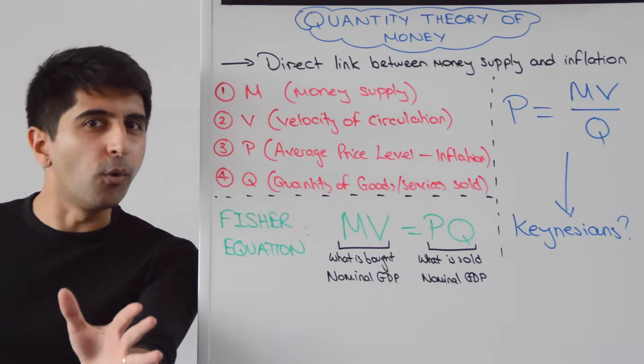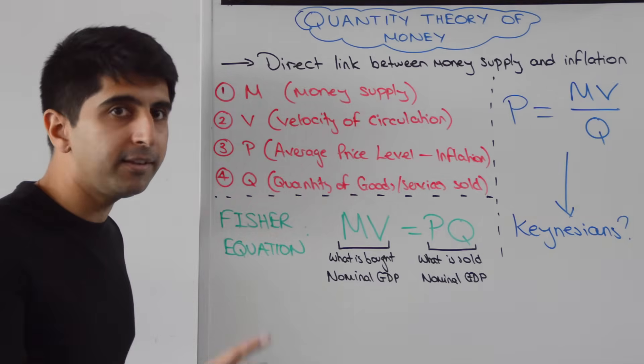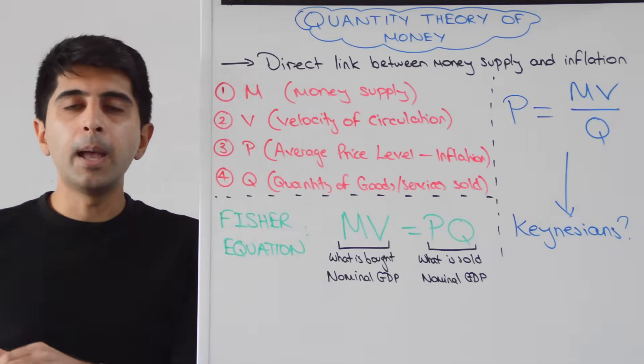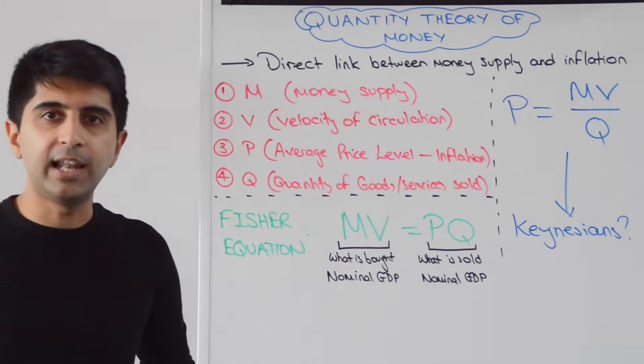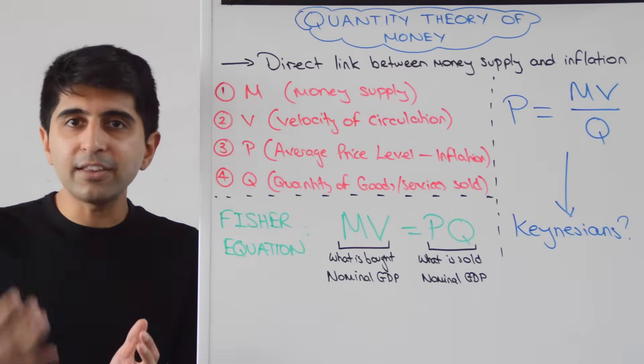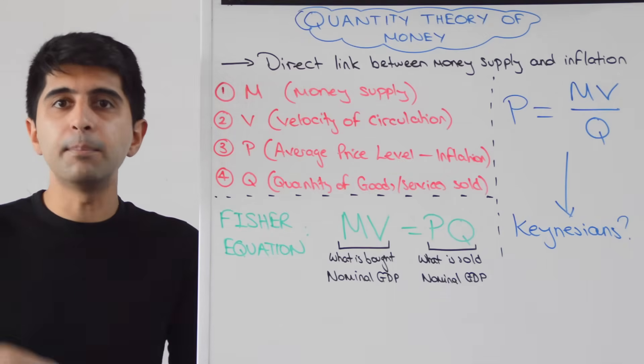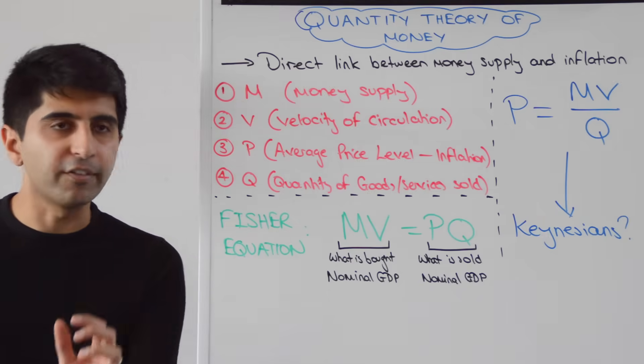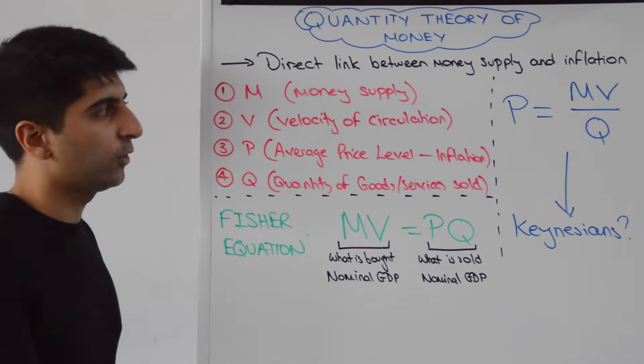What monetarists say is that it's not three variables that can influence prices. It's only the money supply because V and Q are fixed. And they prove this by looking at data over time. And they say that, look, take the velocity of circulation. Yes, V can change. So in a recession, for example, there might be less transactions taking place with the same amount of money. So V can decrease in a recession. In a boom, V can increase. But they argue that V will not increase or decrease by enough to influence prices in the economy, the average price level in the economy, i.e. inflation.